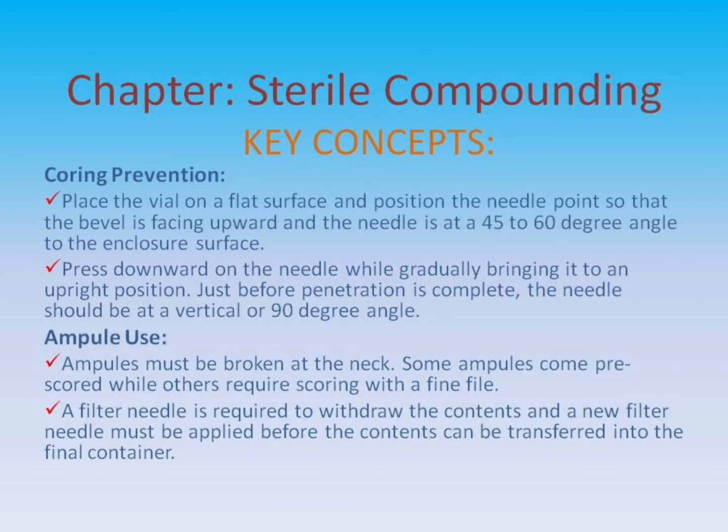Key concepts — Coring prevention: place the vial on a flat surface and position the needle point so that the bevel is facing upward and the needle is at a 45 to 60 degree angle to the enclosure surface. Press downward on the needle while gradually bringing it to an upright position. Just before penetration is complete, the needle should be at a vertical, or 90 degree angle.